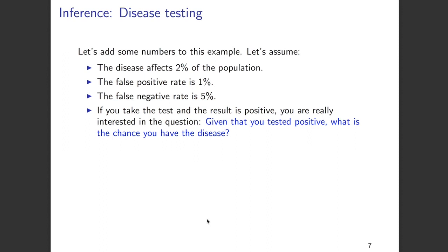Let's add some numbers to that example. Let us assume that a disease affects 2% of a population and at this point there are no symptoms. The test gives a false positive rate of 1% and a false negative rate of 5%. Now let's assume that we take the test and the result is positive. The question we're interested in is: given that we have tested positive, what is the chance that we have the disease?